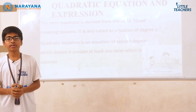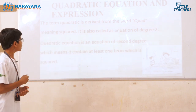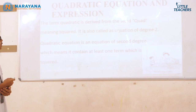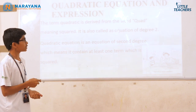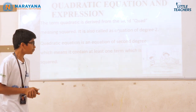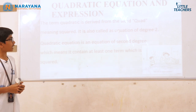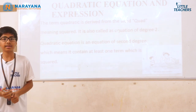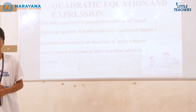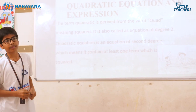To give you a gist on it, here it goes. The term quadratic is derived from the word 'quad', meaning squared. It is also called an equation of degree 2. So the quadratic equation is an equation of second degree, which means at least one term is squared.